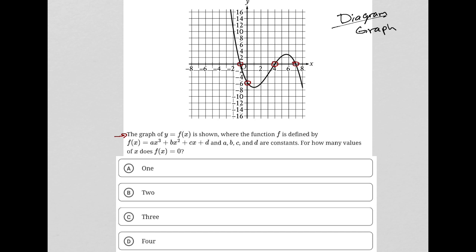f of x is shown where the function f is defined by f of x equals ax cubed plus bx squared plus cx plus d, and a, b, c, and d are constants.